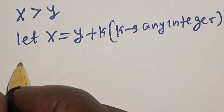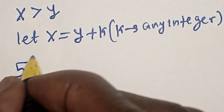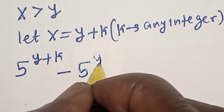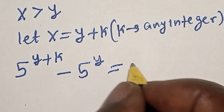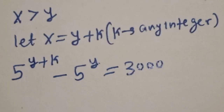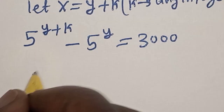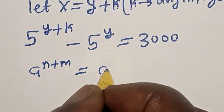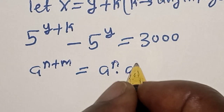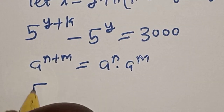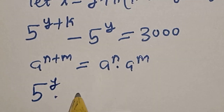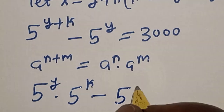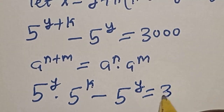Then we have 5 raised to power (y plus k) minus 5 raised to power y is equal to 3000. Remember the rule that a raised to power (n plus m) equals a raised to power n multiplied by a raised to power m. Applying this, we get 5 raised to power y multiplied by 5 raised to power k, minus 5 raised to power y, equals 3000.